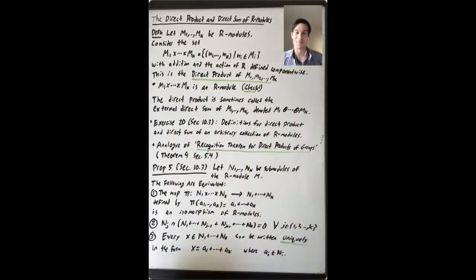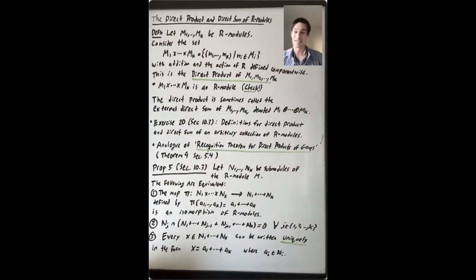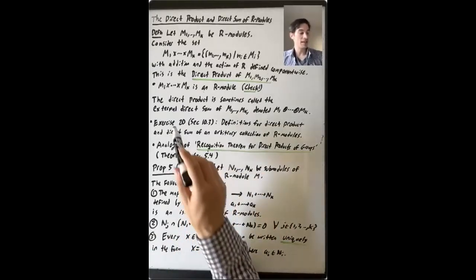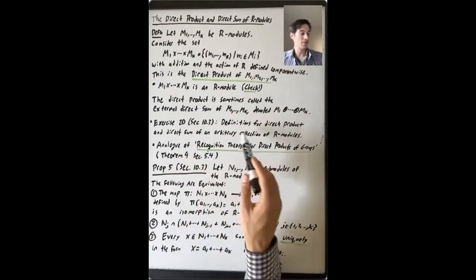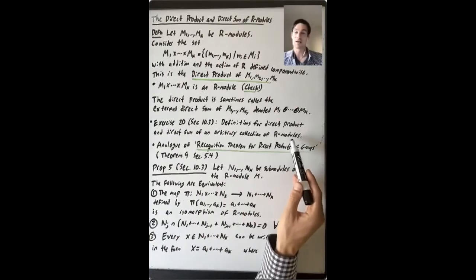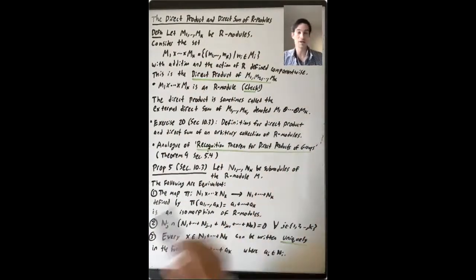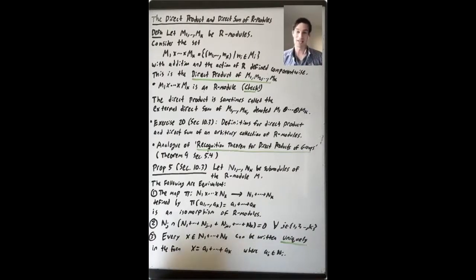Why external direct sum? Well, this should remind you of something that happened when we talked about direct products and direct sums of groups — along with an external direct sum, we encountered an internal direct sum, and that's the same thing that's going to happen here. In exercise 20 of section 10.3, you're given the analogous definitions for direct products and direct sums of arbitrary collections of R-modules, but we won't need any of that here.